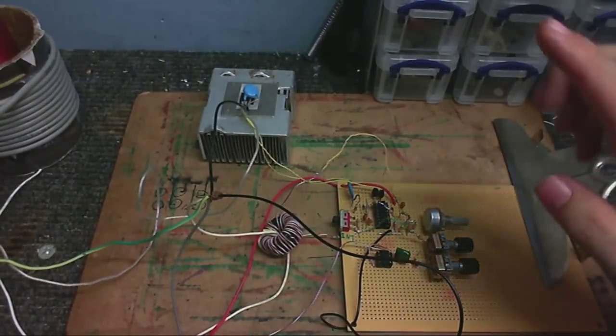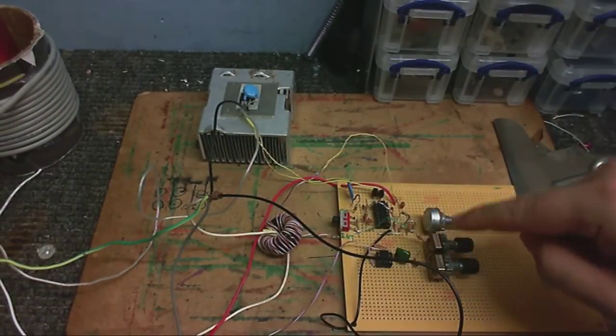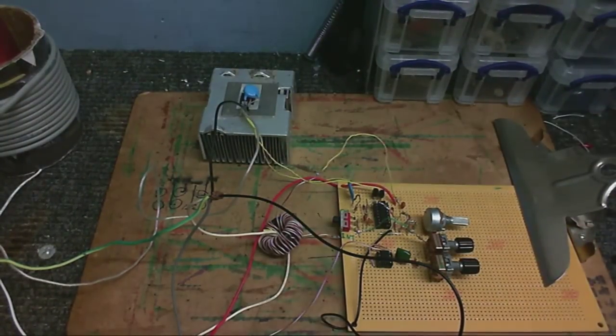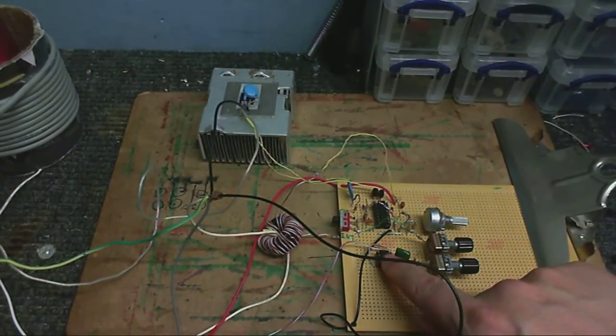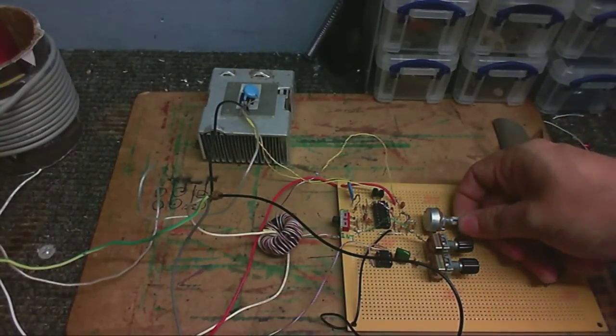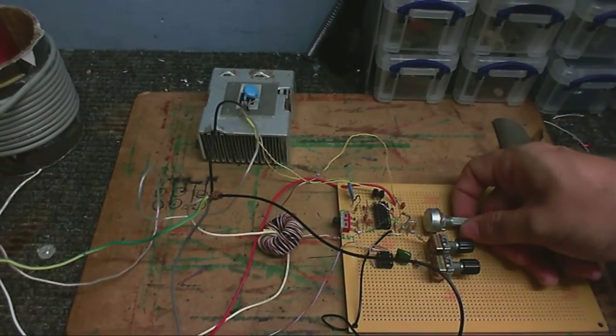And of course, the actual brains of the circuit itself, the control board, with a CD4046 PLL chip as the main part. There's a 555 timer for the interrupter. And here are all the controls to set it up so it works nice and good.